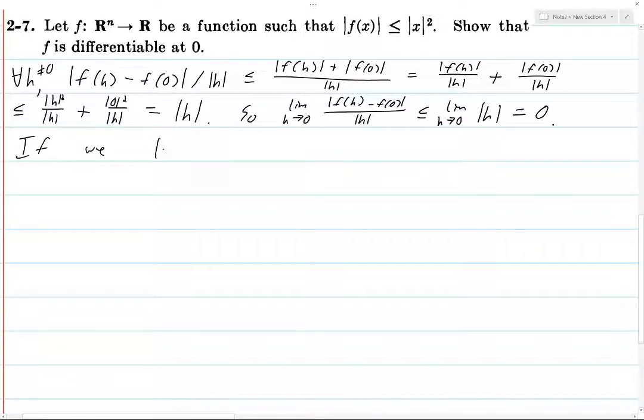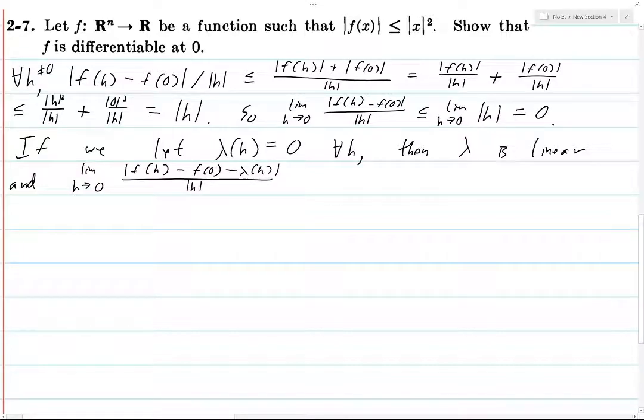So if we let lambda h be zero for all h, then lambda is obviously linear, and the limit as h goes to the zero vector of f of h minus f of zero minus lambda h over the norm of h. Well, this part just drops out, and what you're left with, we know that that limit is zero, so this is zero.